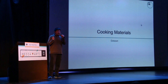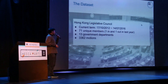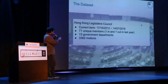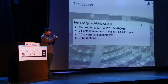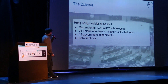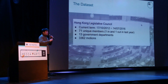Let's look at our data materials and think about what we can do. We got data from the Legislative Council for the past years. There are 71 unique members — I said 70 members because one member left the council last year and a new one joined. So there are 71 unique members, plus some government departments. In total, there are more than 3,000 motions.